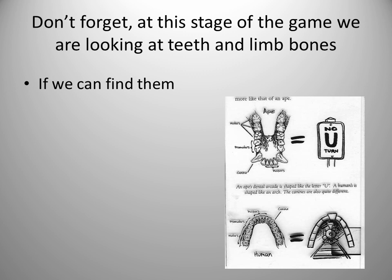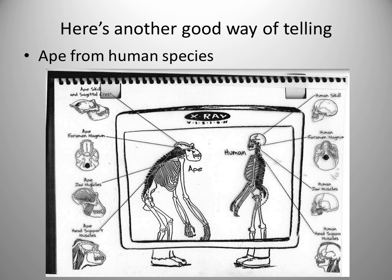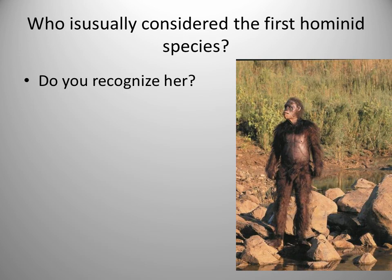With humans, the diastema is not there, as well as the reduced canines. Here's another picture of an actual chimp versus human — see the differences in the cusps and in the overall dental arcade. The point and reason I'm showing you all this is, this is how they can tell the difference: is it ape? Is it human?